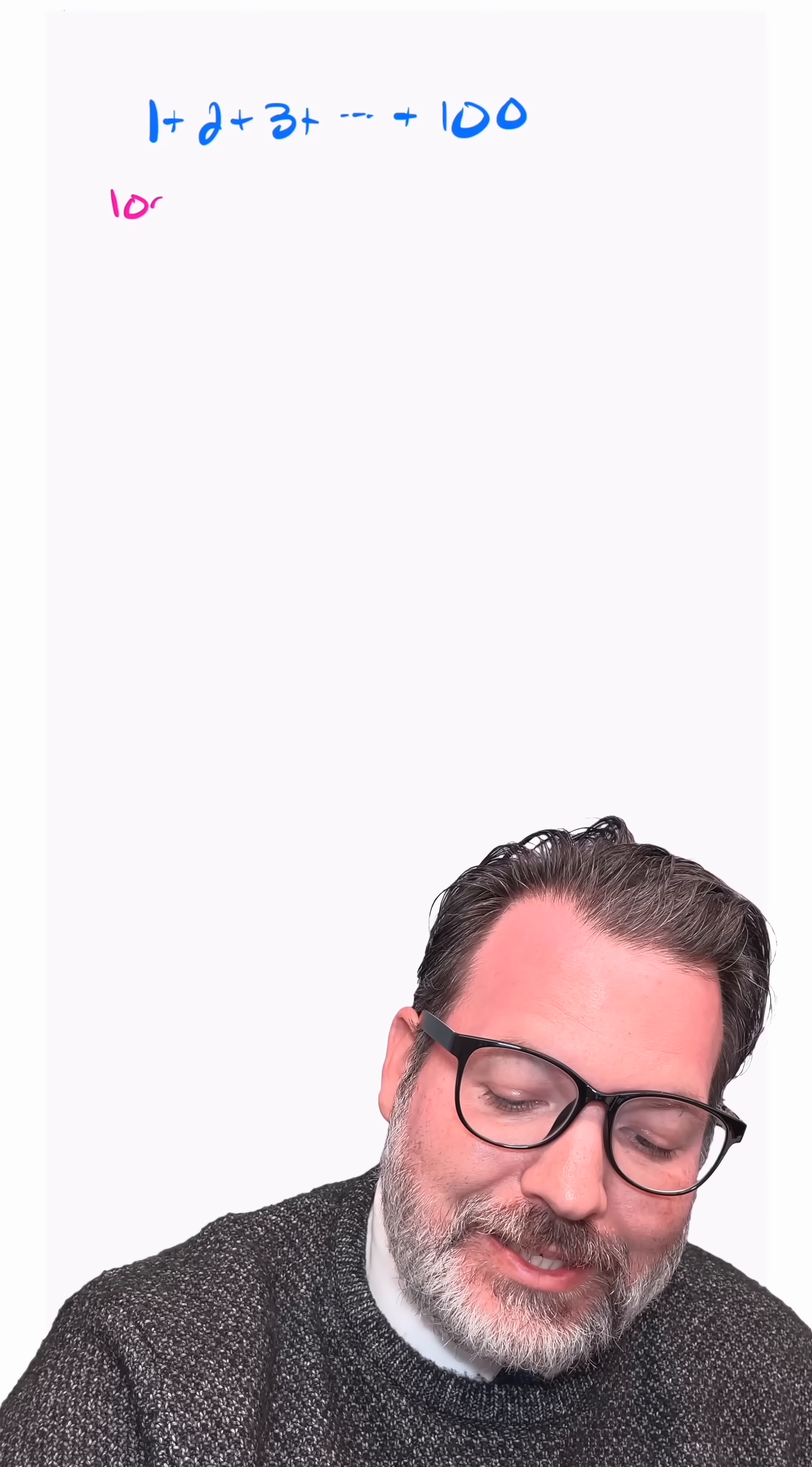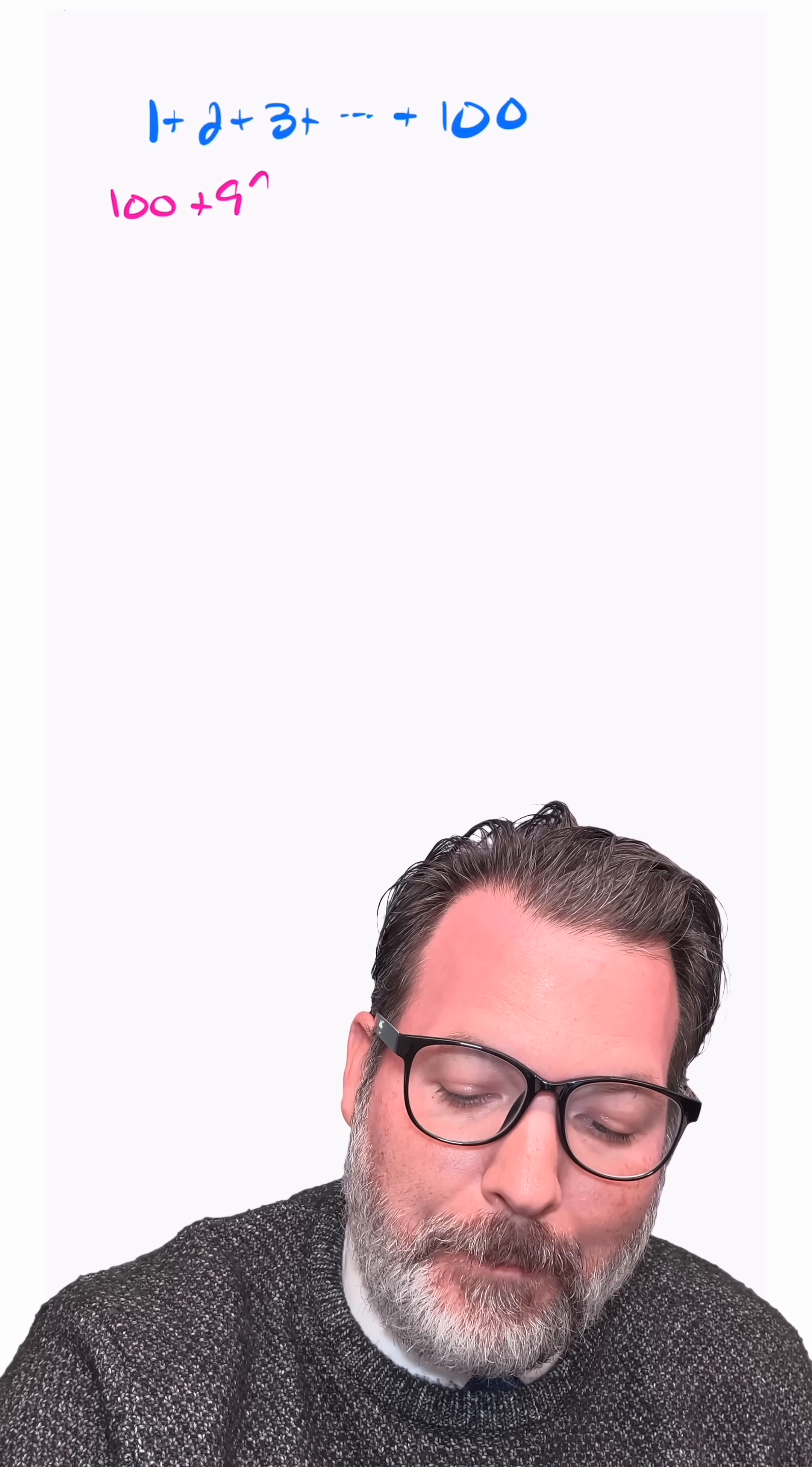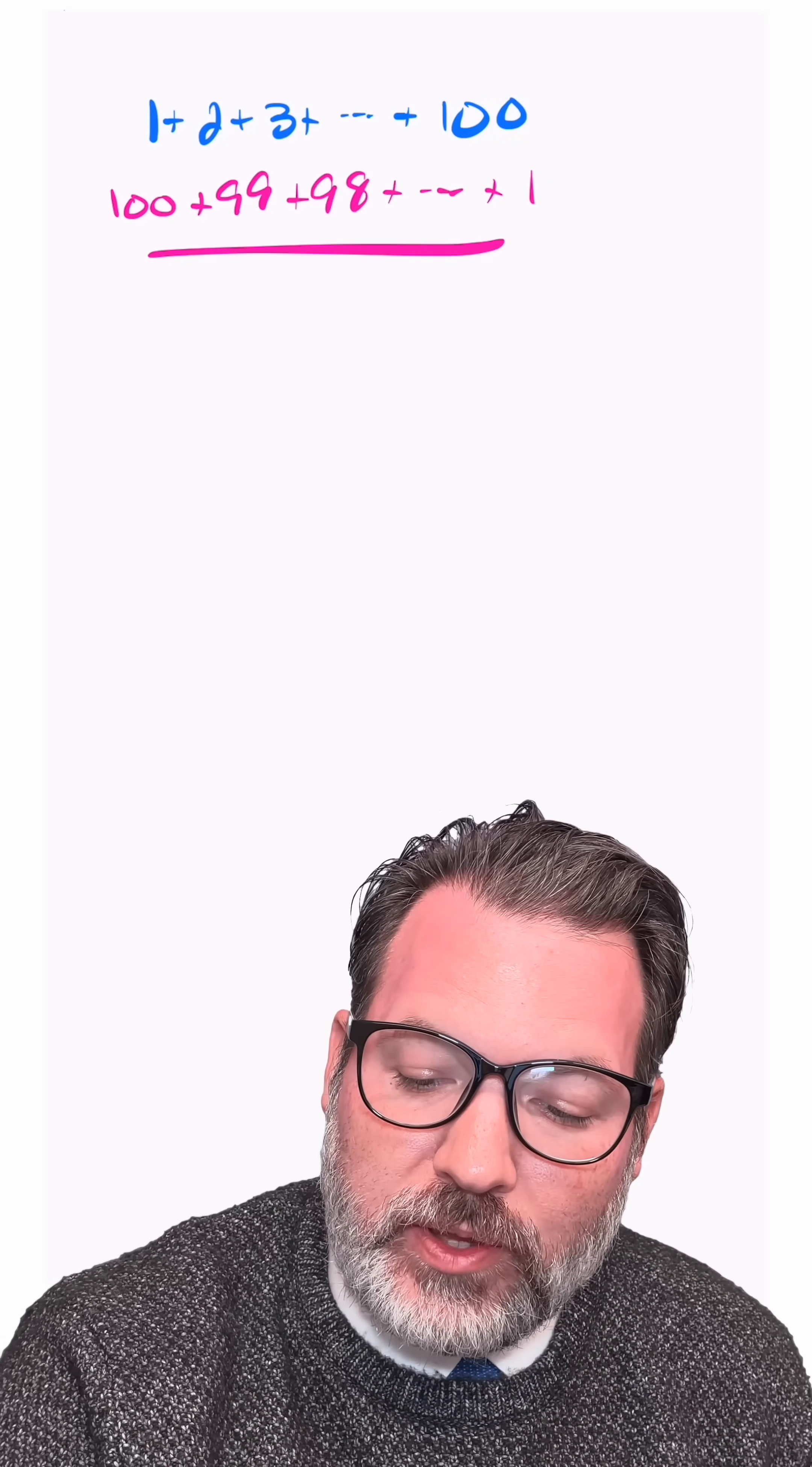So Gauss shows him. Gauss takes the same exact list, all the integers 1 through 100, but writes it backwards: 100 plus 99 plus 98 all the way down to plus 1. When you line it up this way, if you add vertically rather than horizontally, you'll notice something interesting.